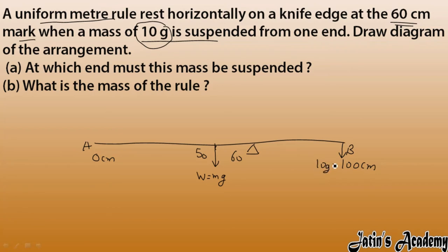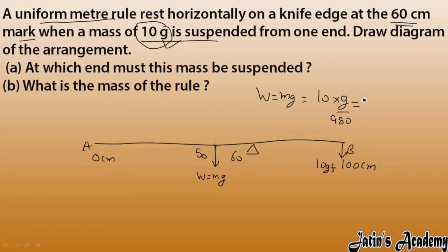The 10 gram mass gives a force of 10 gram-force (10 gf), since weight equals m times g. Now I apply the principle of moments: clockwise moment equals anti-clockwise moment.